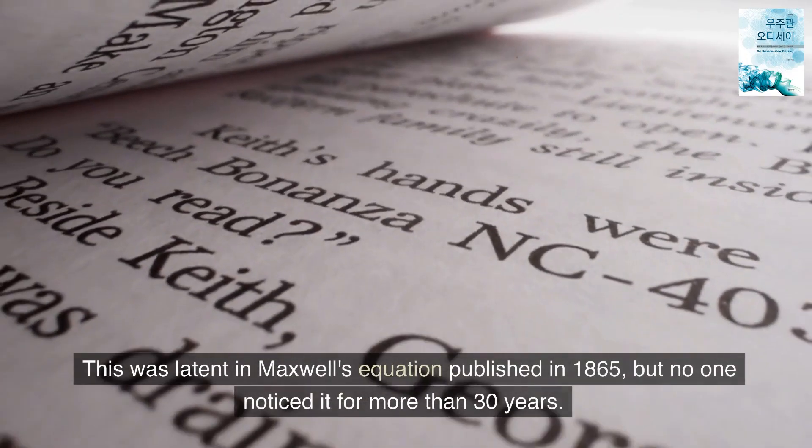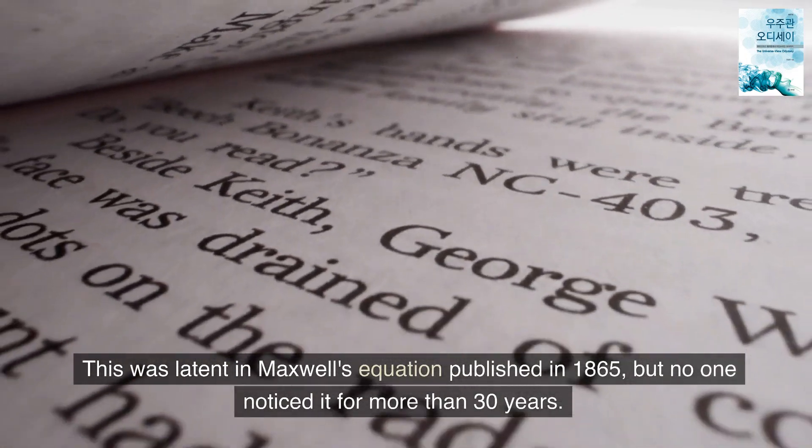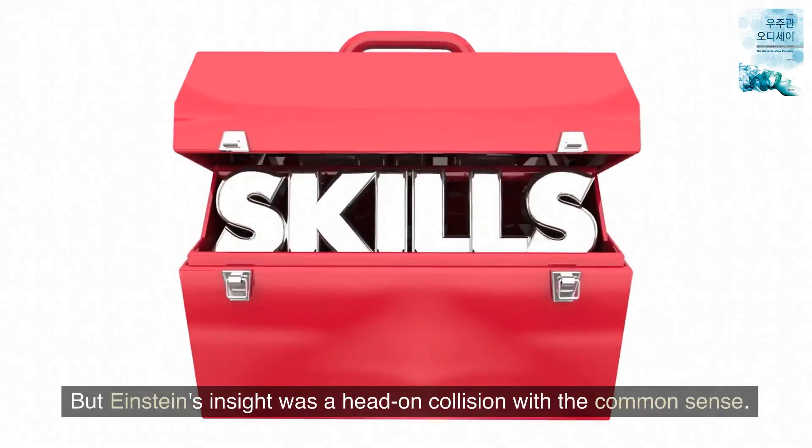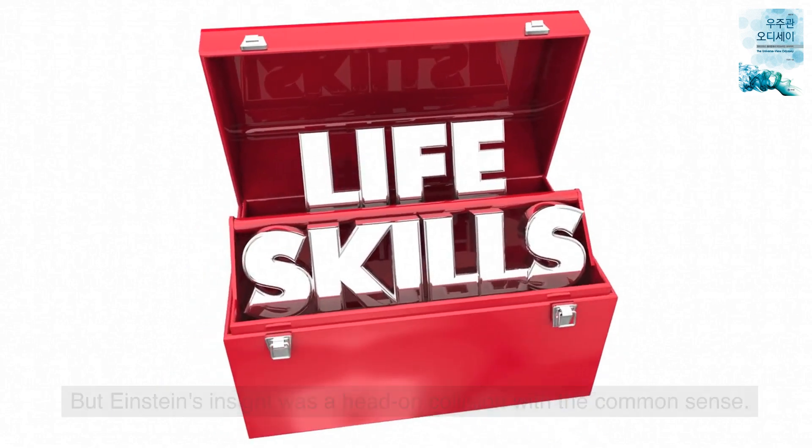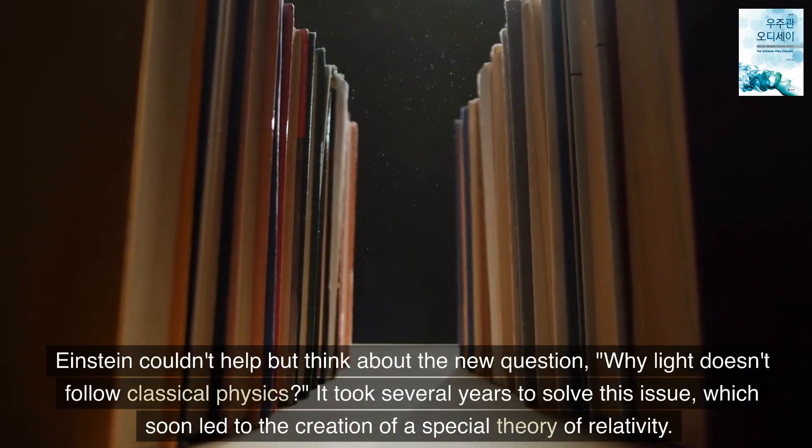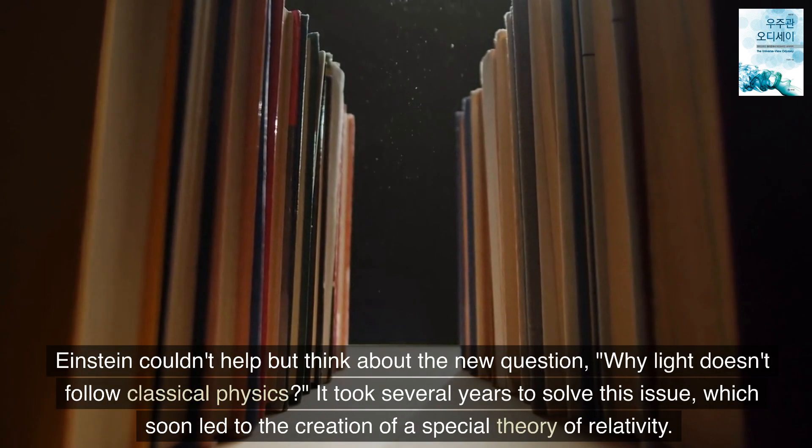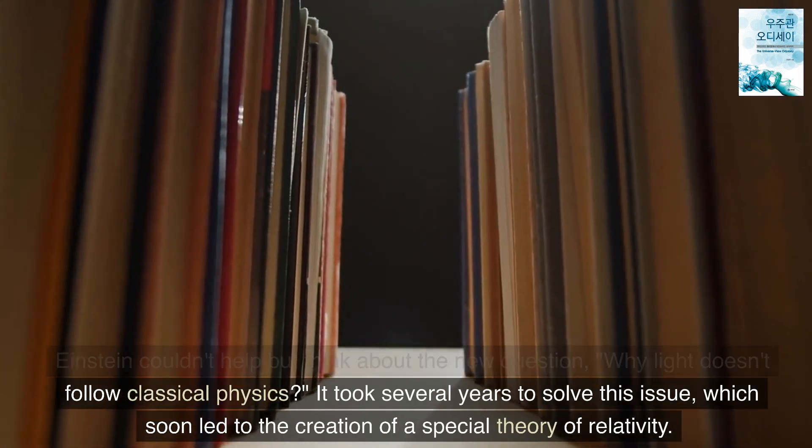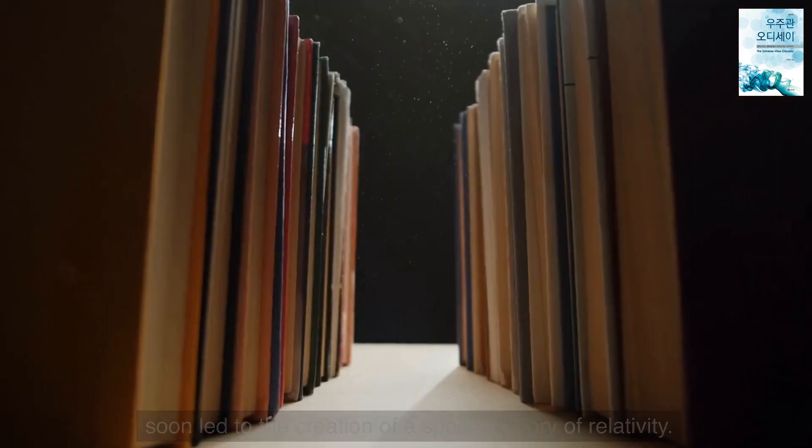This was latent in Maxwell's equation published in 1865, but no one noticed it for more than 30 years. But Einstein's insight was a head-on collision with the common sense. Einstein couldn't help but think about the new question, why light doesn't follow classical physics. It took several years to solve this issue, which soon led to the creation of a special theory of relativity.